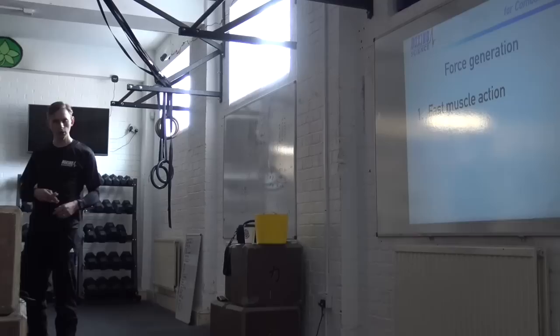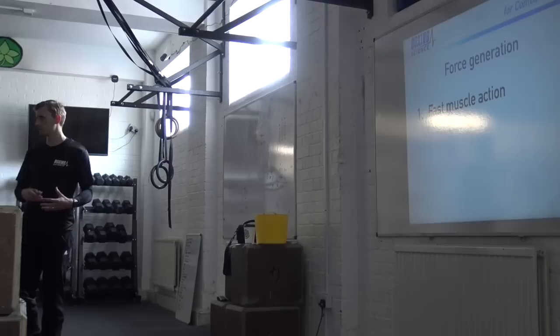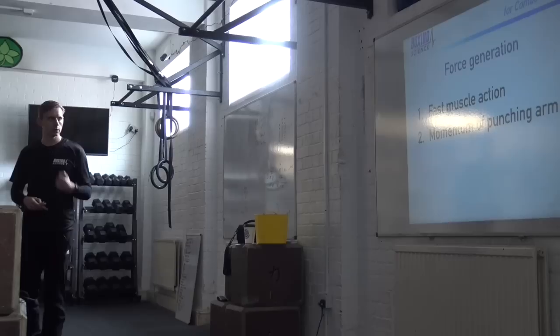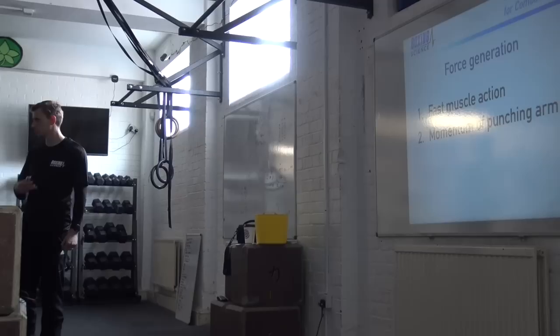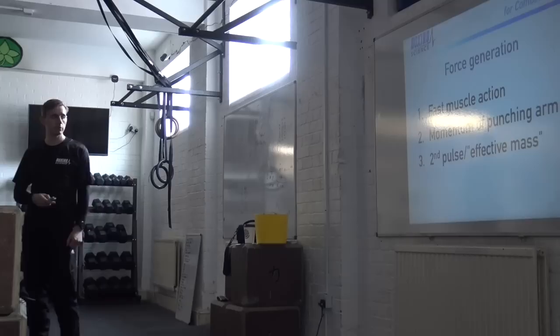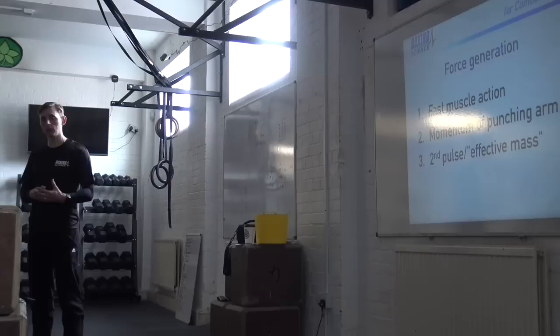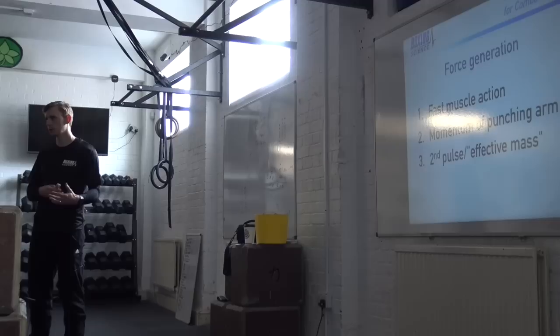What we've got in boxing is fast muscle actions - for those high force punches, fast muscle actions occurring. We've got something called momentum, which is really important in boxing and explains a lot about punching performance. And then we have the second pulse, or effective muscle. Dan touched on that earlier and it's actually quite an important part of making contact and how effective a punch is.